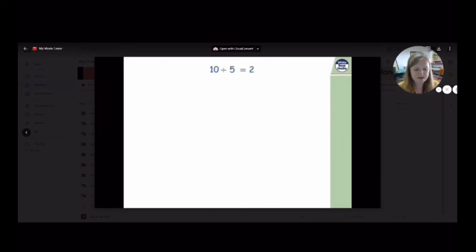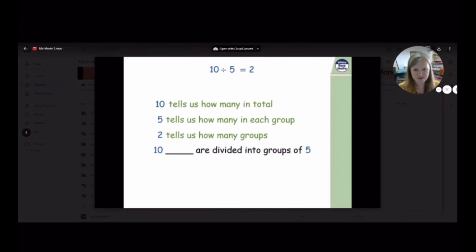Now, here's another number sentence. 10 divided by five is equal to two. Can you remember what the 10 tells us, what the five tells us, and what the two tells us? The 10 tells us how many there are altogether. The five tells us how many is in each group and the two tells us how many groups there are. Let's think about this in a real-life context. We've got 10 somethings and they're divided into groups of five. In the end, there will be two groups.